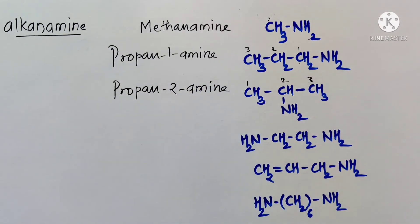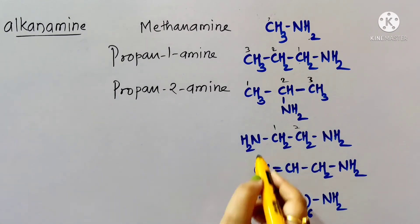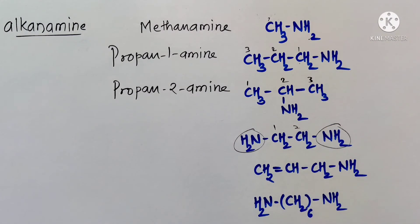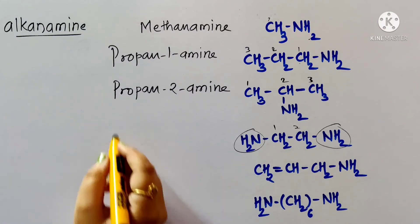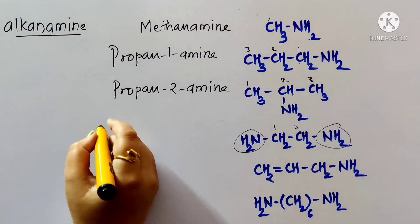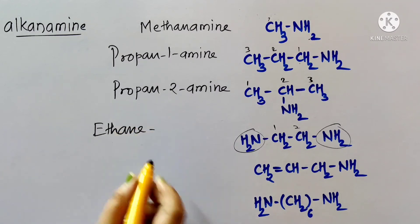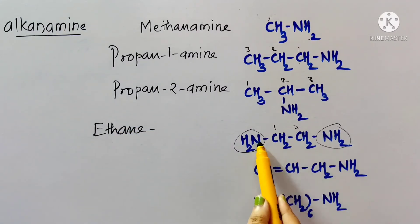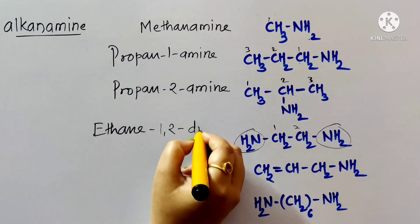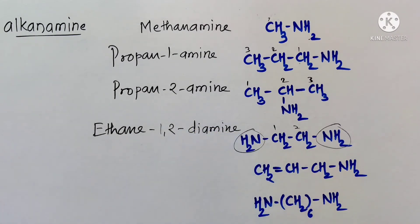For a compound with two carbon atoms and two amino groups, we write 'diamine' before the suffix. The two-carbon alkane is ethane, and amino groups are attached to the first and second carbon atoms, so the IUPAC name is ethane-1,2-diamine.